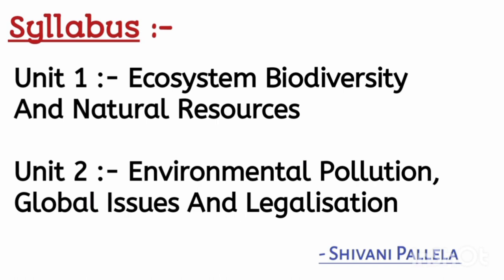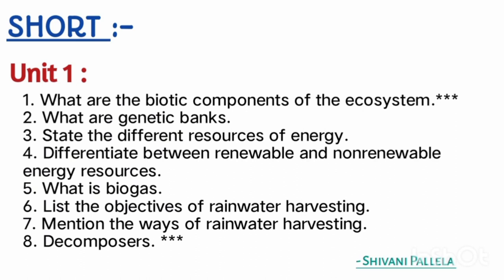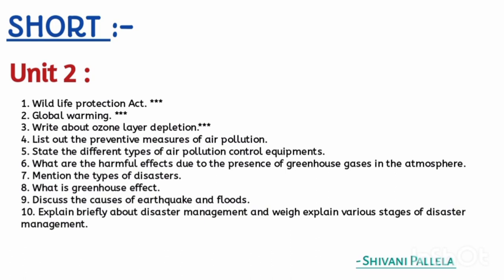Now we will discuss important short questions from Unit 1. The important topics are: decomposers, ways of rainwater harvesting, biogas, biotic components of an ecosystem, and different resources of energy. These five questions are the most important from Unit 1.